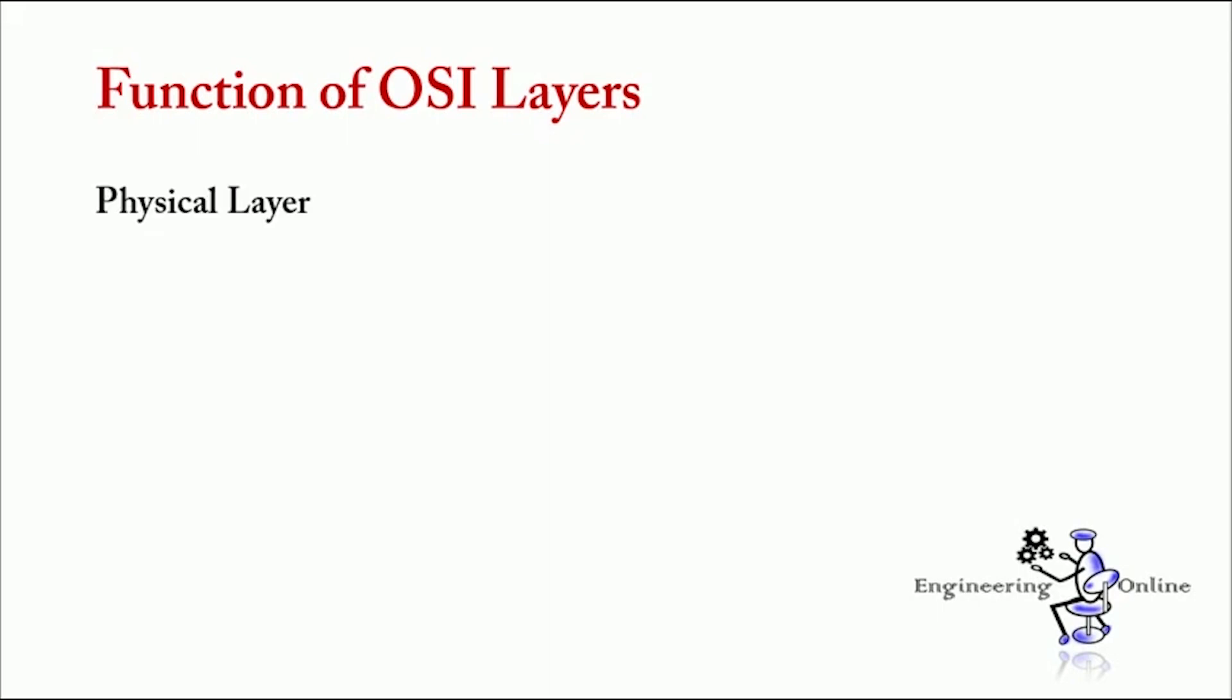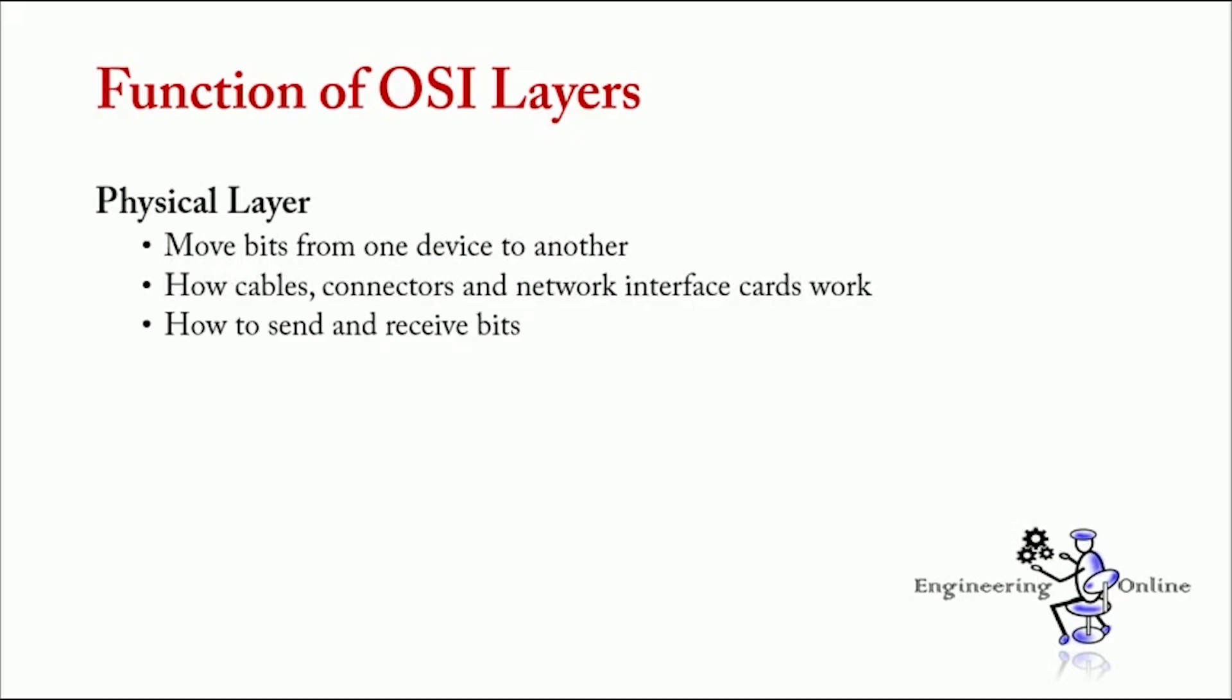So, first we have physical layer. Physical layer defines how to move bits from one device to another. It details how cables, connectors and network interface cards are supposed to work, and how to send and receive bits.